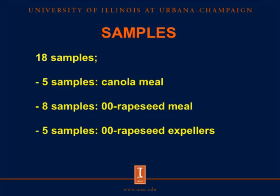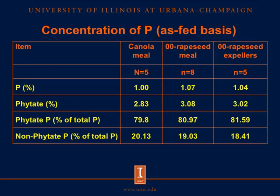We had 18 samples: five canola meal samples, eight 00 rapeseed meal samples, and five 00 rapeseed expeller samples. The concentration of phosphorus and phytate in canola meal, 00 rapeseed meal, and 00 rapeseed expeller were similar. The ratio between phytate phosphorus and non-phytate phosphorus in percent of total phosphorus was between 80% to 20%.